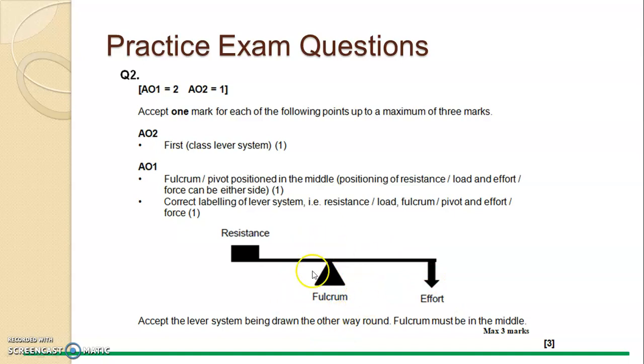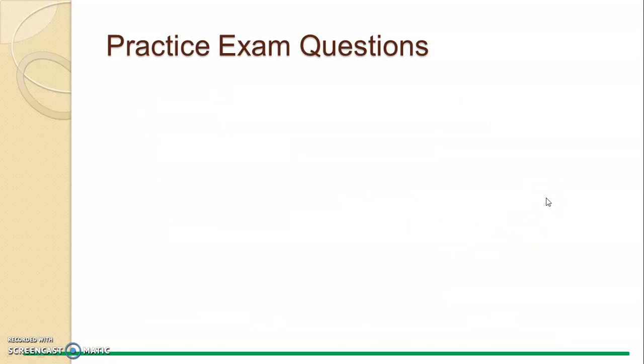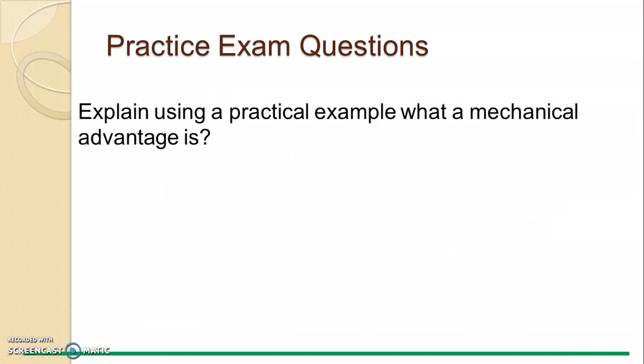Just to reiterate, fulcrum is the hinge joint of the elbow, the effort is the triceps and the pulling of the tendon, and the resistance is the ball, and that creates that counter, that movement there to push that ball up and out and extend the arms. I hope that makes sense. If not, please re-go over this recording. Second example exam question.